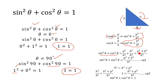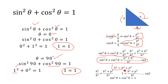we get perpendicular squared plus base squared divided by hypotenuse squared. Name this equation number one. Now according to the Pythagorean theorem, hypotenuse squared is equal to base squared plus perpendicular squared. If we divide both sides of this equation by hypotenuse squared, hypotenuse squared cancels out and we get 1 equals base squared plus perpendicular squared divided by hypotenuse squared.